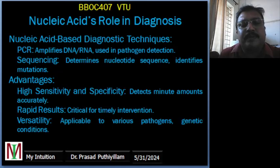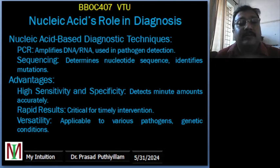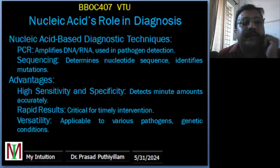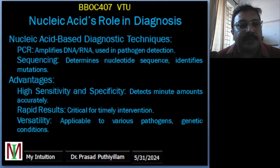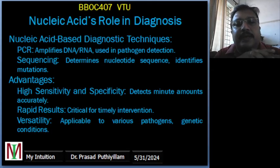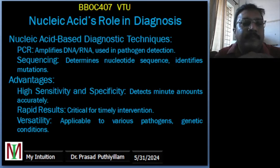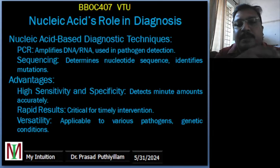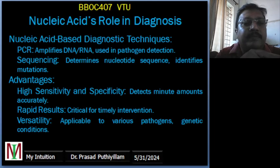Moving on to the role in diagnosis: nucleic acid-based diagnostic techniques are essential for accurate and rapid detection of viruses and pathogens. For example, PCR — the Polymerase Chain Reaction — amplifies very small quantities of DNA or RNA to a detectable level. COVID-19 diagnosis tests often use RT-PCR, which detects the viral RNA confirming an active infection.